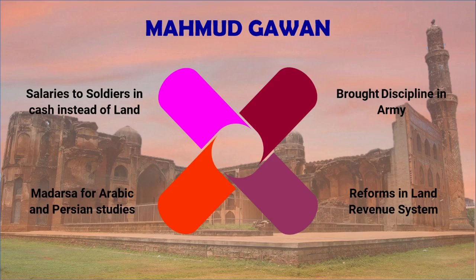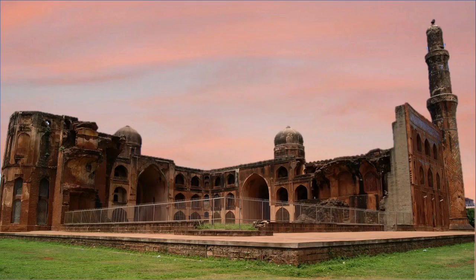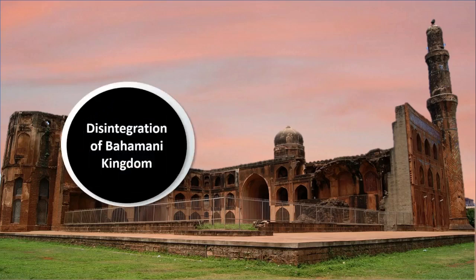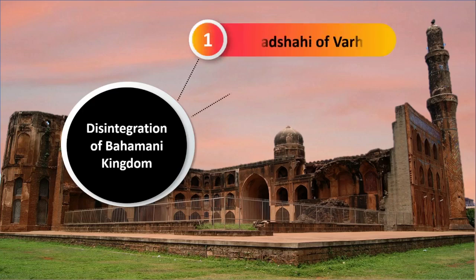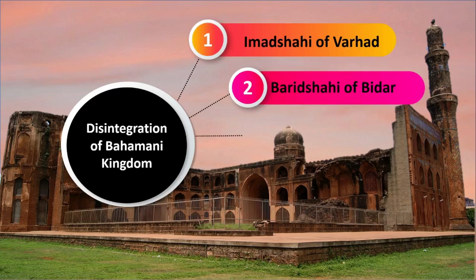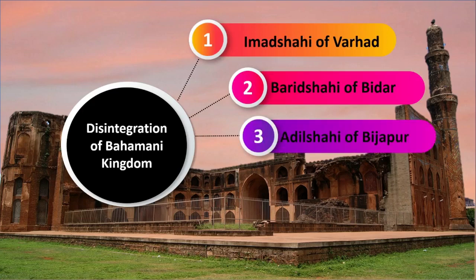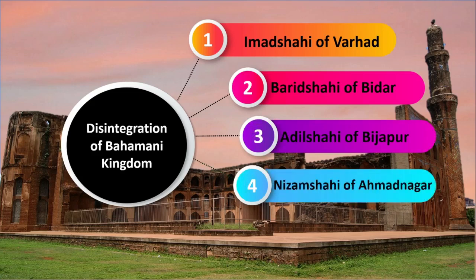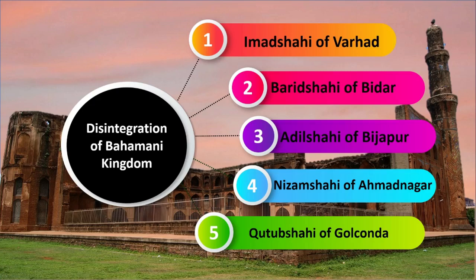factionalism — that is, dividing into small groups — increased among the Bahamani sardars. The conflict with the Vijayanagar Kingdom had an adverse effect on the Bahamani Kingdom. The provincial governors began to act more independently. This led to the disintegration of the Bahamani Kingdom into five small powers: Imad Shahi of Varhad, Barid Shahi of Bidar, Adil Shahi of Bijapur, Nizam Shahi of Ahmadnagar, and Kutub Shahi of Golconda.